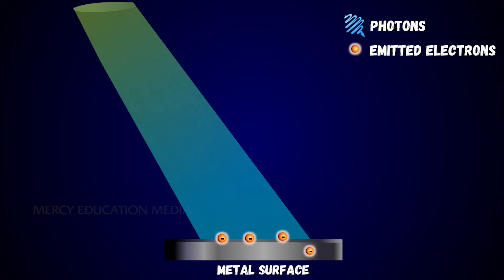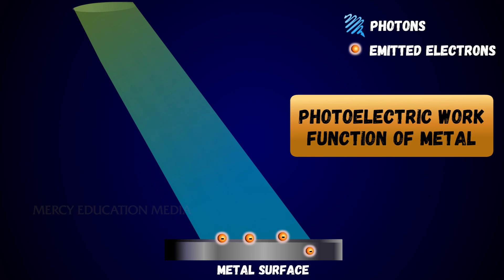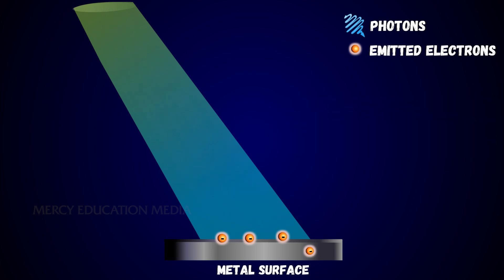This energy W spent in releasing the photoelectron is known as the photoelectric work function of the metal. The work function is defined as the minimum amount of energy required to liberate an electron from the metal surface.